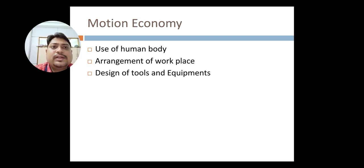Then the last is motion economy. Generally, three main parts are there in motion economy. Use of human body. Use of human body means generally when workers are doing work on particular machinery or they are assembling products. The body parts like hand, fingers, elbows, shoulder, all those parts they are using. How they are using that is called use of human body.